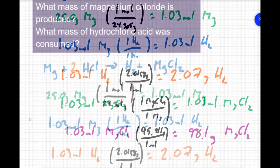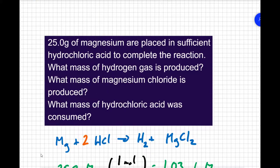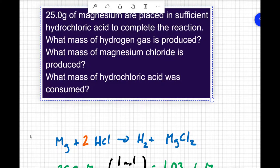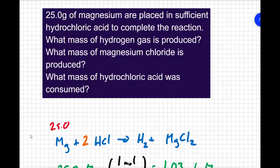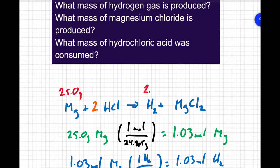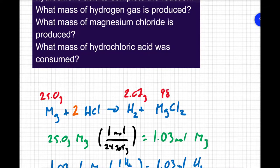Alright, now I'm just about done. I want to know the mass of hydrochloric acid, and I know the mass of three of my four things. I know that I started with 25 grams of magnesium, I know that I made 2.07 grams of hydrogen, and I know that I made 98.1 grams of magnesium chloride.